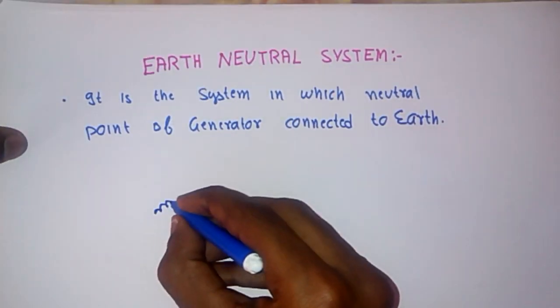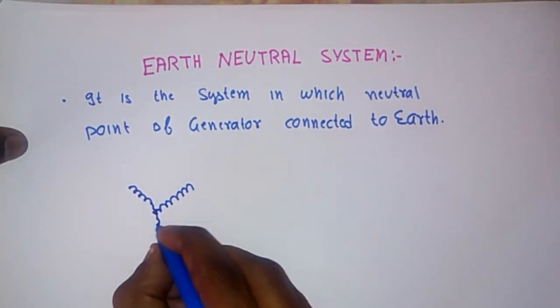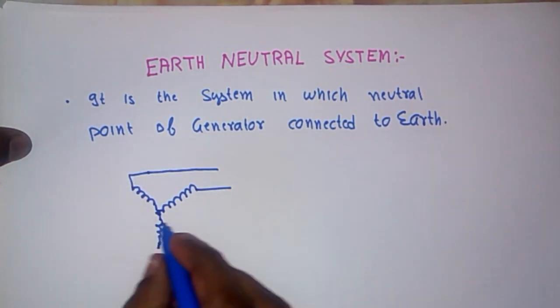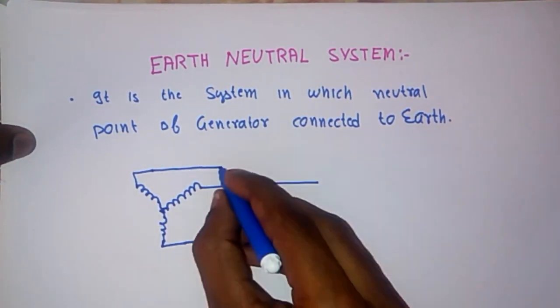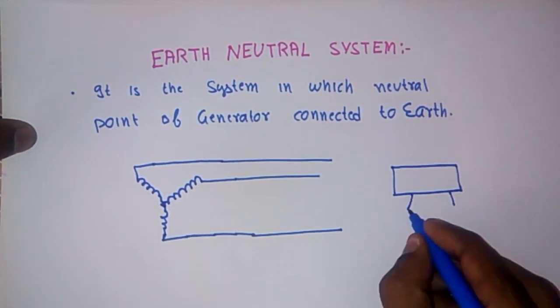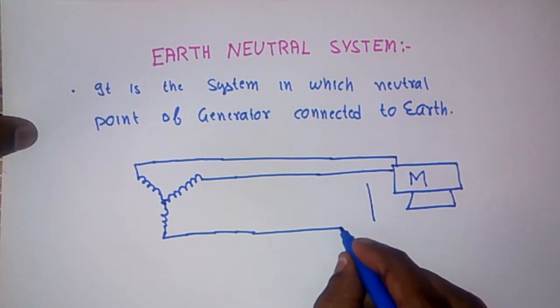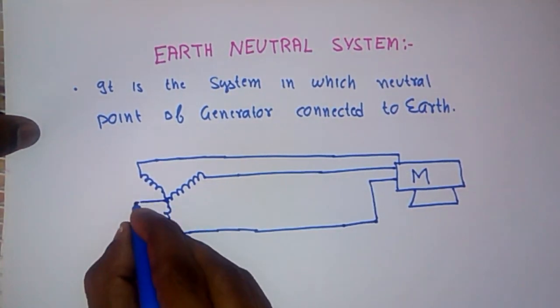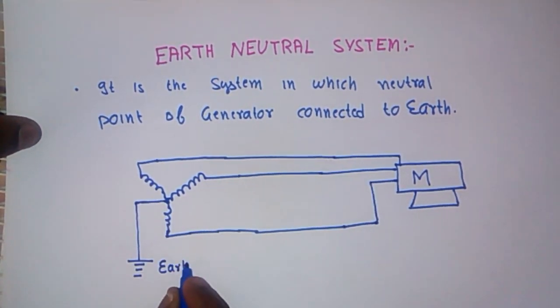Now I will draw a diagram of generator which is connected in star and supply of that generator is going to a one electrical motor, three-phase electrical motor. This is the neutral point of generator is connected to the earth.